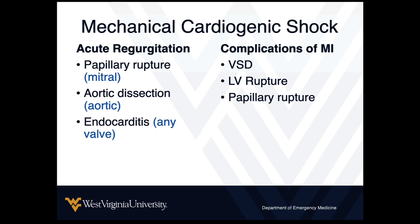The mechanical etiologies of cardiogenic shock are things that cause acute regurgitation: papillary rupture, which leads to mitral regurgitation; aortic dissection, which leads to aortic regurgitation; endocarditis affecting any valve; and then complications of acute MI, which may include an ischemic VSD, left ventricular free wall rupture, and papillary rupture. With these, there's a fair likelihood that we should also see regional wall motion abnormalities.